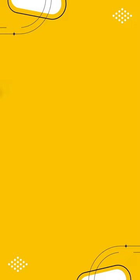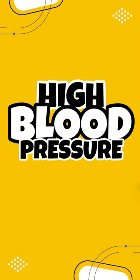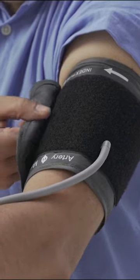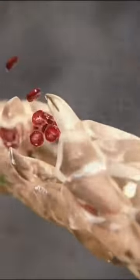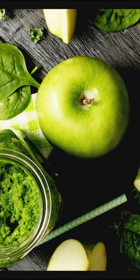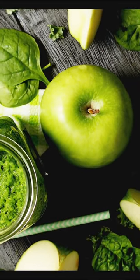The main factor for stroke prevention is blood pressure management. High blood pressure is the most significant risk factor for stroke, contributing to damage in blood vessels and increasing the likelihood of clot formation. Follow the DASH diet or other heart-healthy eating plans. Engage in regular physical activity to help lower blood pressure.